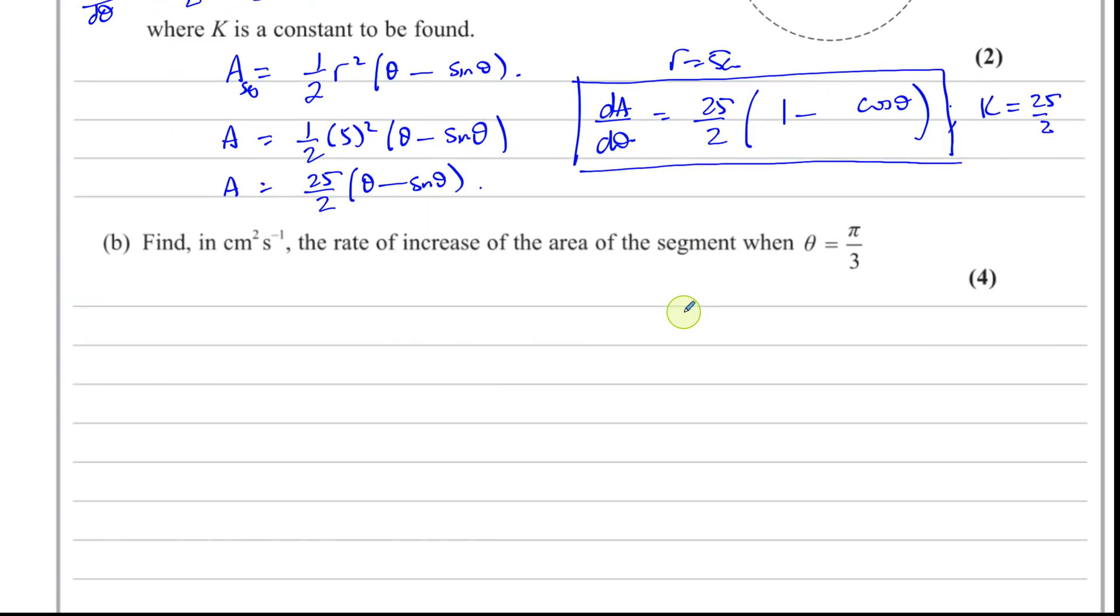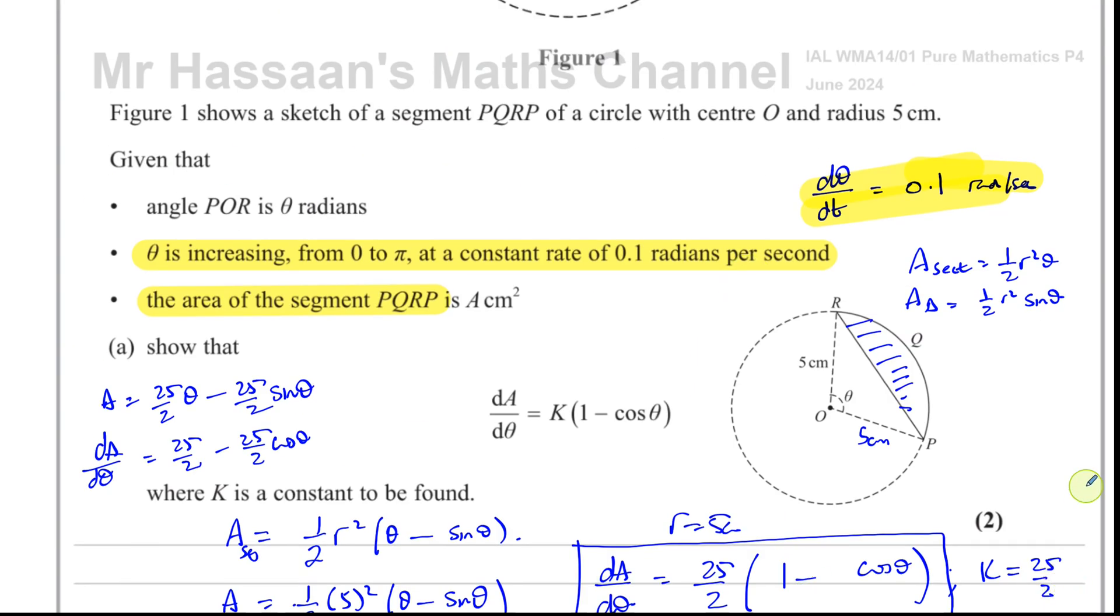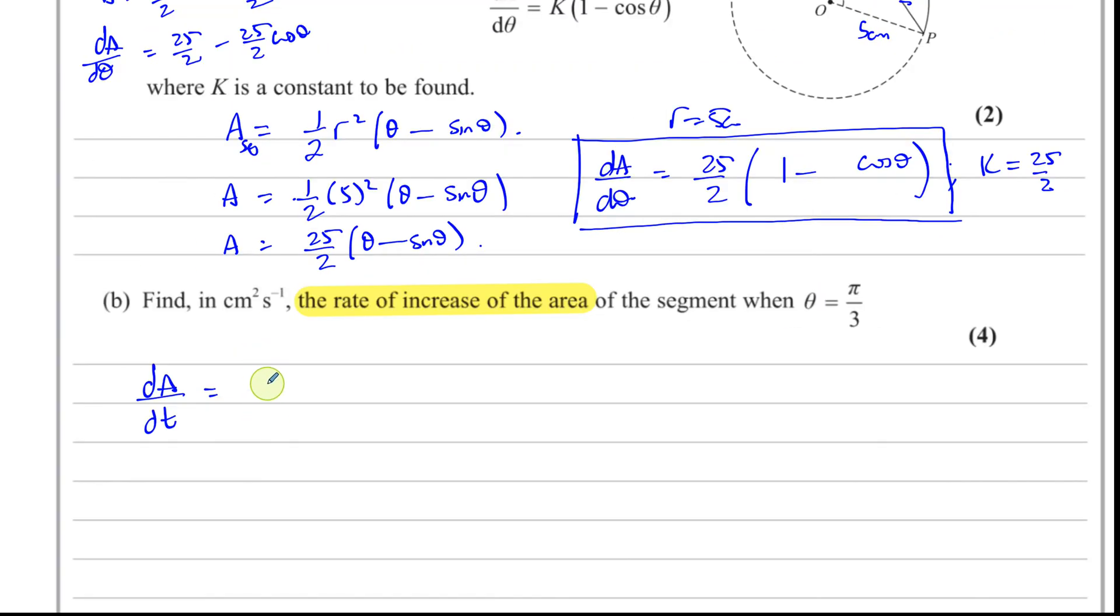Then part B says, find in centimeters squared per second the rate of increase of the area of the segment when theta equals pi over three. So we've got to find the rate of increase of the area, the rate of increase of the area of the segment. The rate of increase means with respect to time, centimeters squared per second. So we have to find dA/dt. That's what we have to find. Now, what we're given in the question, we are given the fact that dθ/dt is 0.1. That's what we're given. That's one thing that's given.